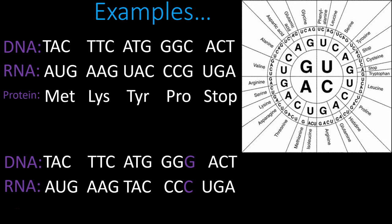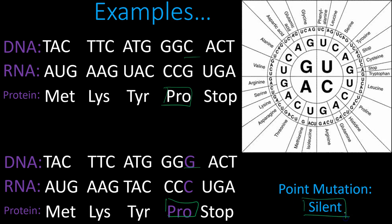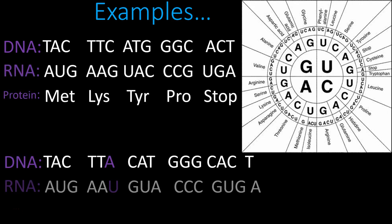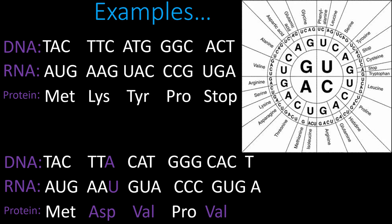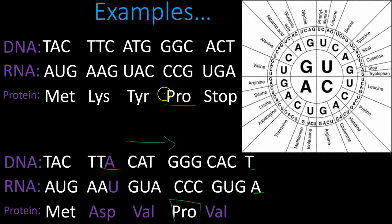What if a cytosine mutates into a guanine, but we still end up with proline — the same amino acid? That would still be a mutation because there was a change in the DNA, but it would be called a silent mutation because it had no effect on the protein — both codons code for proline. Now, if I insert one nucleotide and everything shifts to the right, I can identify it as an insertion because there's one extra base visible at the far right of the sequence.